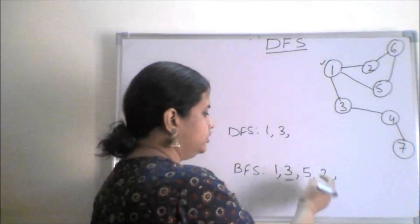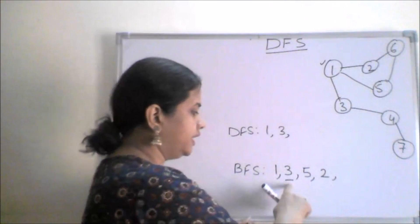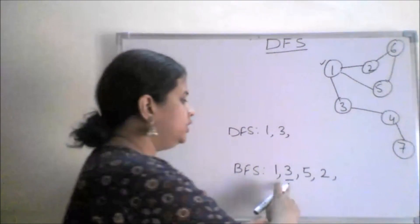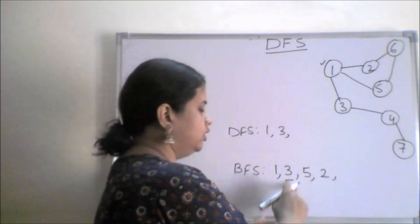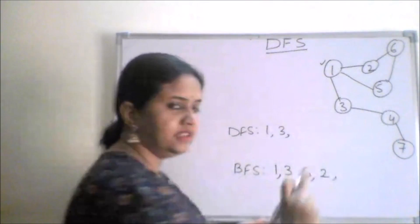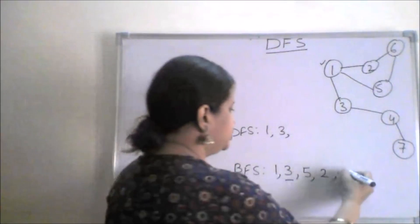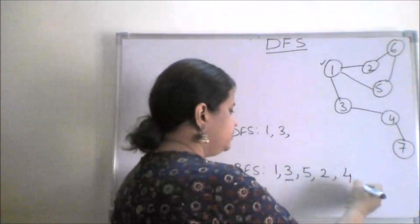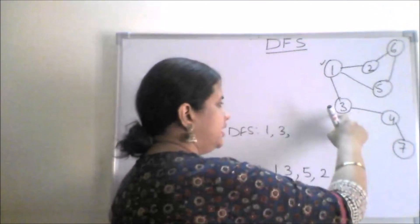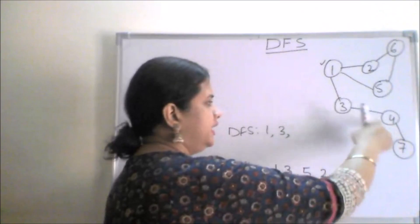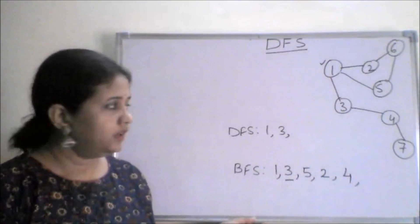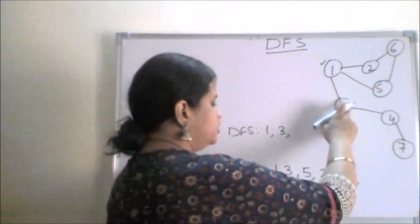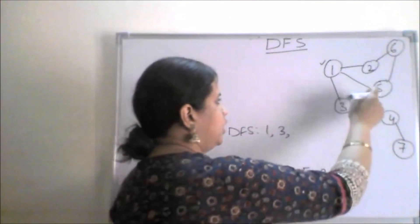What you need to do is go back to your list and pick up the second node. Once you pick up the second node, explore it. Whatever adjacent nodes it has, put them in the visited list. So I put four in the list. There is only one adjacent node of three, which is four, so three is completely explored.